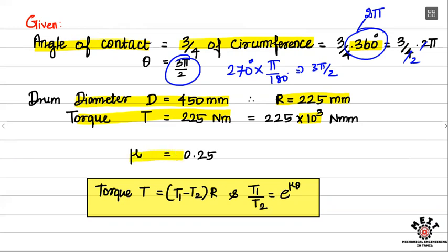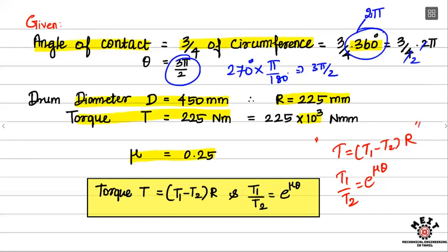Coefficient of friction mu is equal to 0.25. Now we are going to use two equations from belt friction. We use two equations: torque equals tension difference into the radius of the drum, and the ratio of tensions equals e to the power mu theta. The band acts as a belt - the rotating drum is slowed down as the belt touches it, creating friction. T1 is the tight side and T2 is the slack (loose) side.